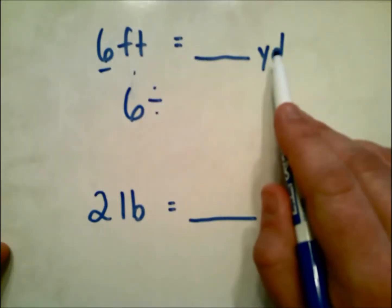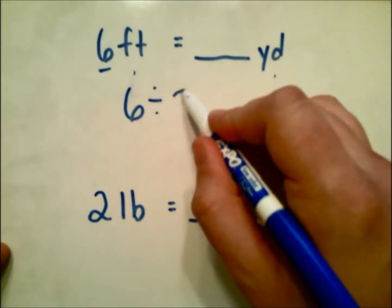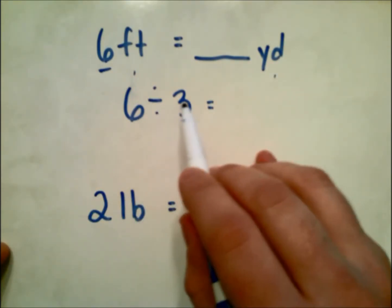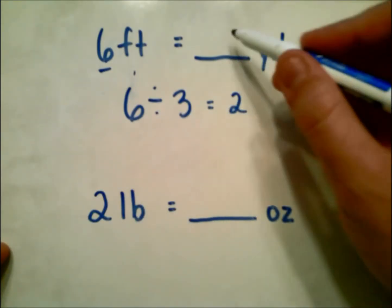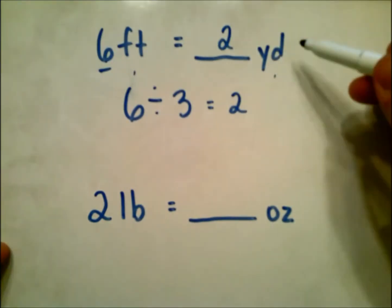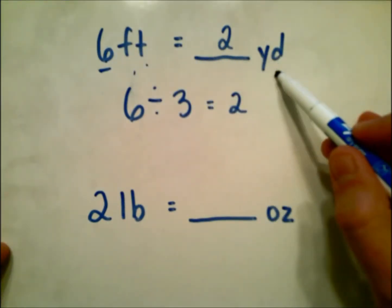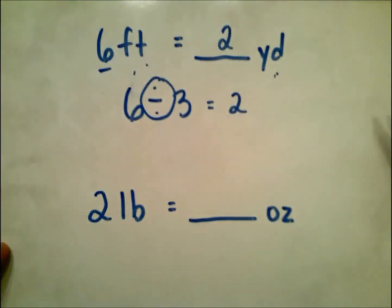We're going to divide by the number of feet that we know are in yards. We know that there are 3 feet in every yard, so 6 divided by 3 is 2. So we know that 6 feet equals 2 yards, and that's because we're going from a smaller unit to a larger unit, so we use division.